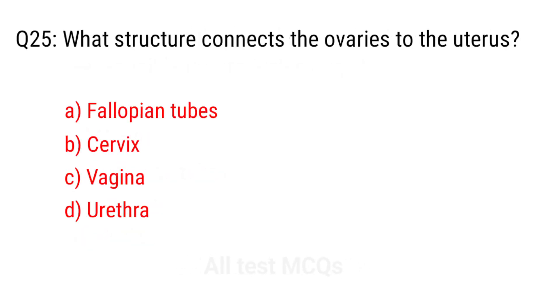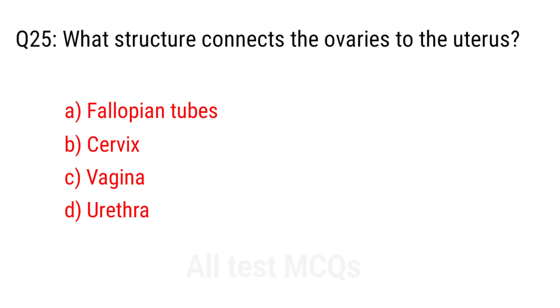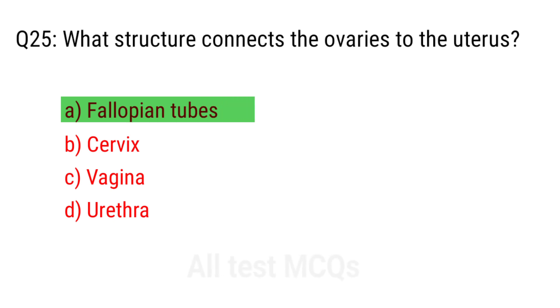Q25. What structure connects the ovaries to the uterus? The right answer is option A: Fallopian tubes.